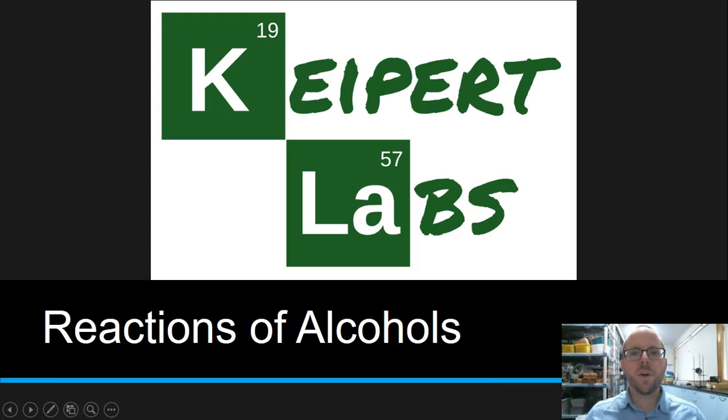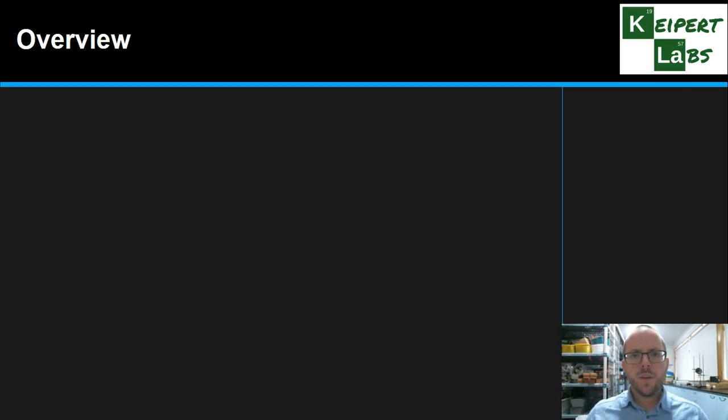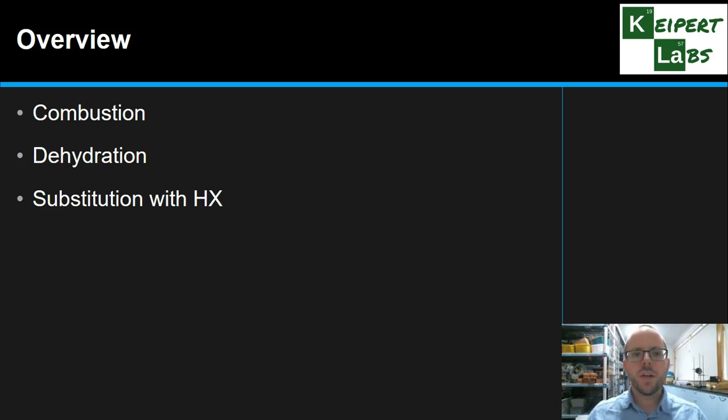Hi everyone, welcome to this episode of Kuypert Labs. In today's video we're going to talk about the reactions of alcohols. There's four main categories of reactions that we're going to focus on. We're going to look at combustion, dehydration, substitution reactions with a hydrogen halide, and then oxidation and reduction of alcohols.